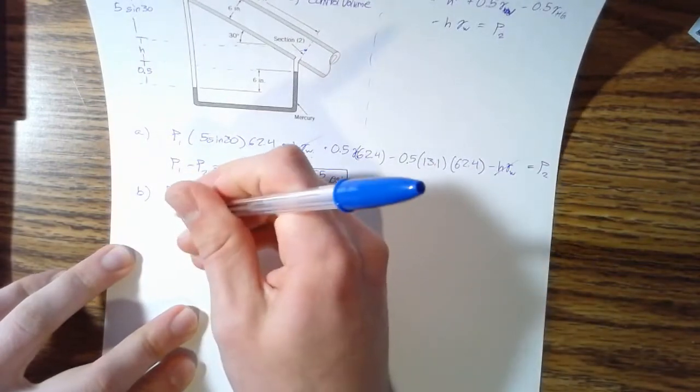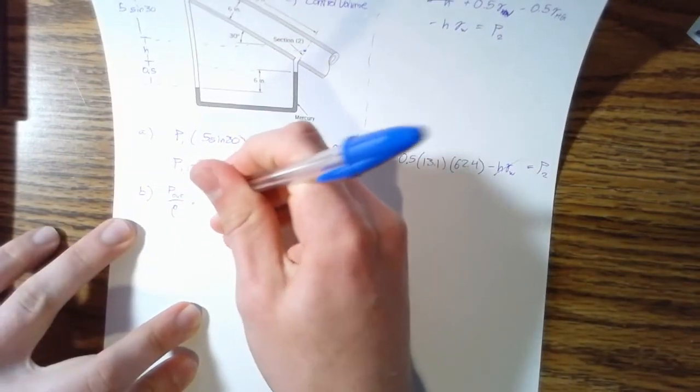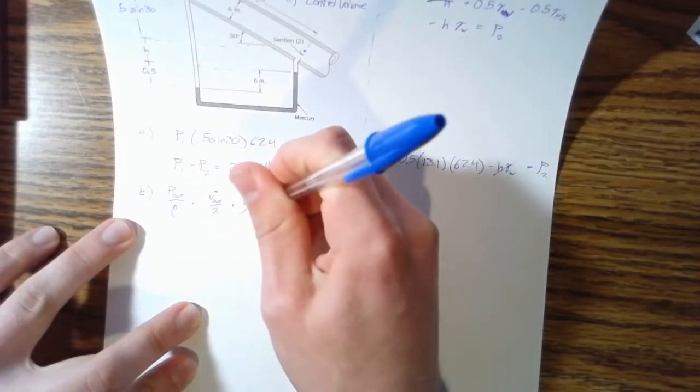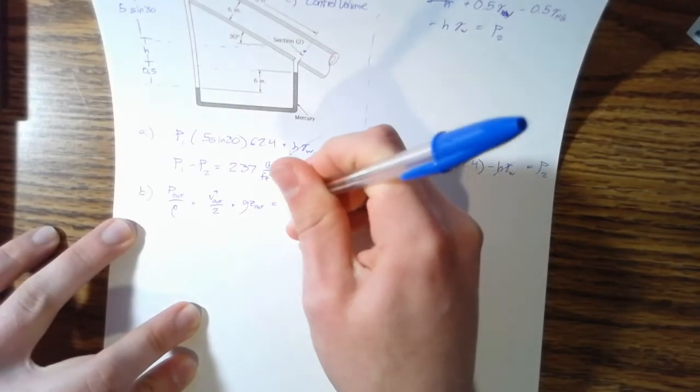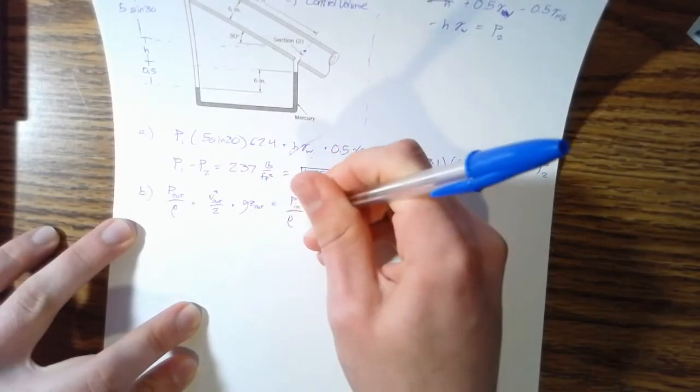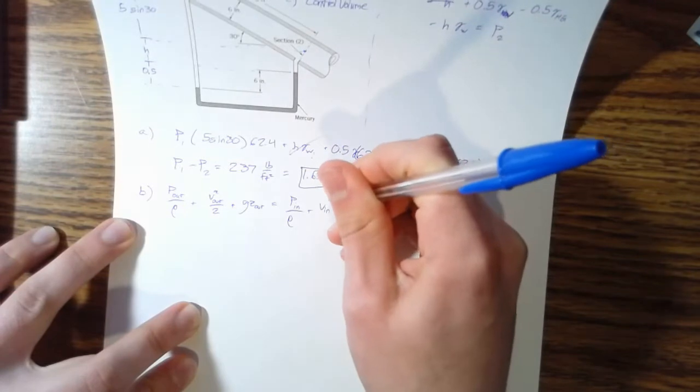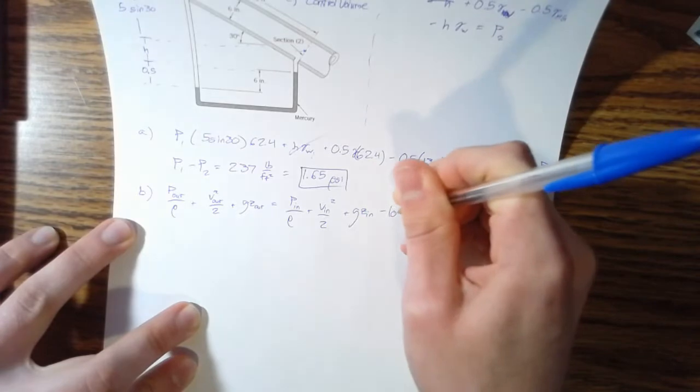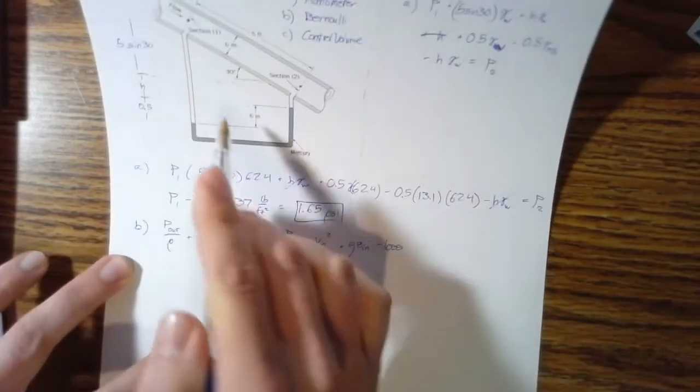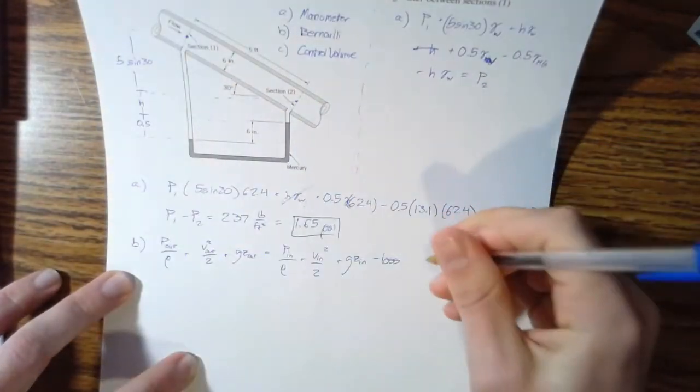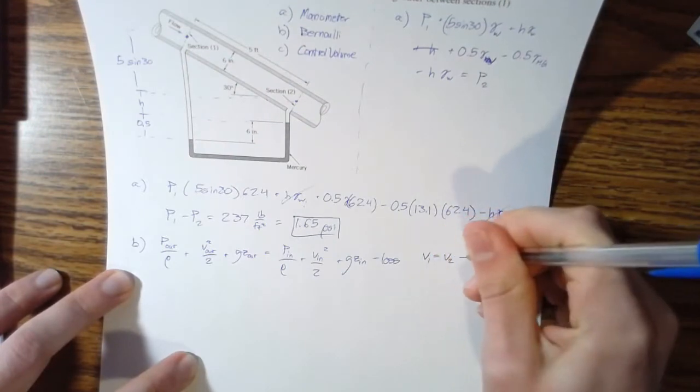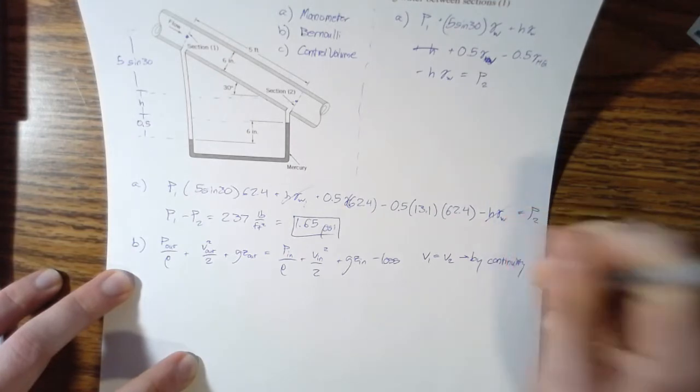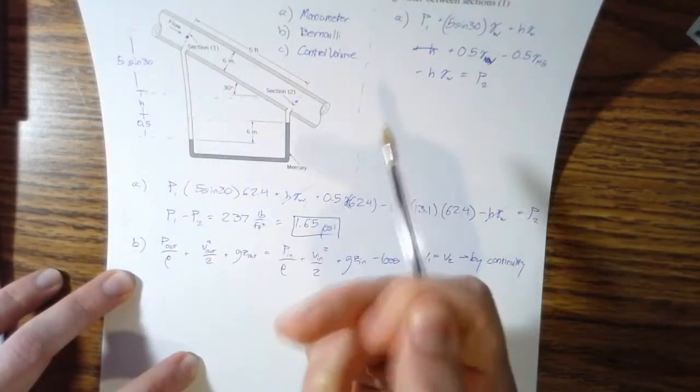So pressure out over rho plus V squared out over two plus G times Z out equals pressure in over rho plus V in squared over two plus G Z in minus loss. And what we know about velocity of one, it's going to be the same as the velocity of two by continuity, right? There's no change in area or change in flow.